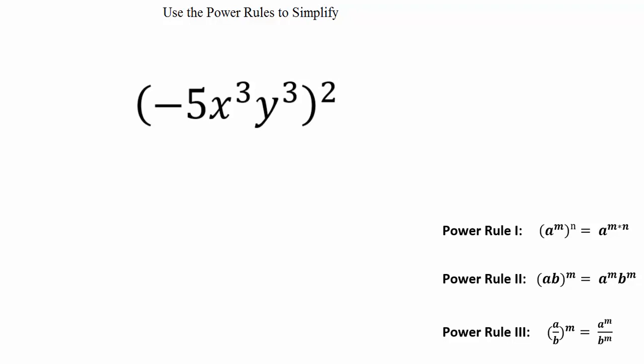Power rule 2 states that when we have multiple factors inside parentheses, the exponent around the parentheses goes to everything inside the parentheses.